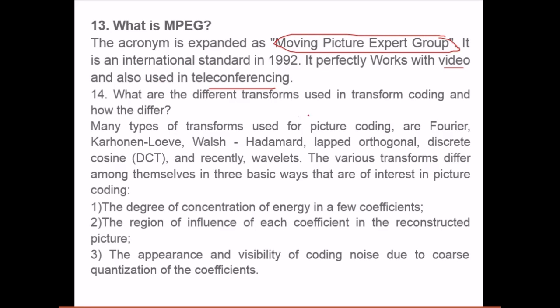What are the different transforms used in transform coding and how do they differ? Many types of transforms used in picture coding: Fourier, KL transform, Walsh-Hadamard transform, Slant transform, DCT, and recently we have wavelets because JPEG 2000 used wavelets.